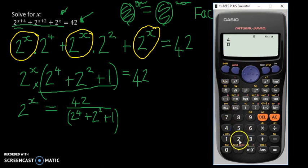Okay, so let's put the bracket in. We say 42, and underneath 2 to the power of 4 plus 2 to the power of 2 plus 1. Let's see.